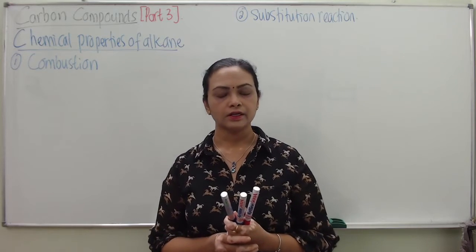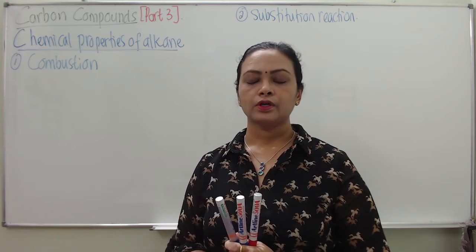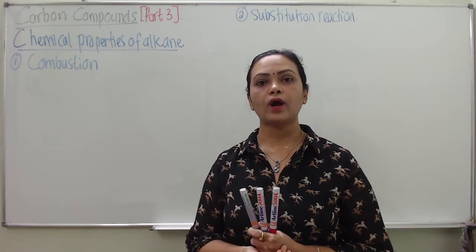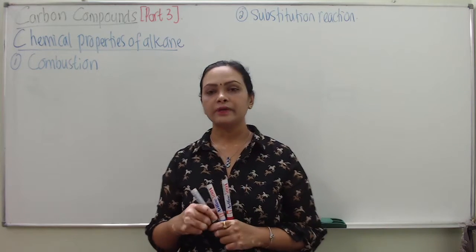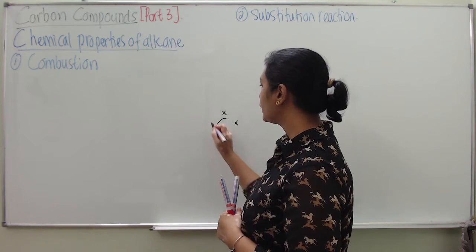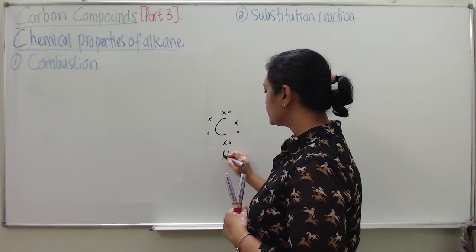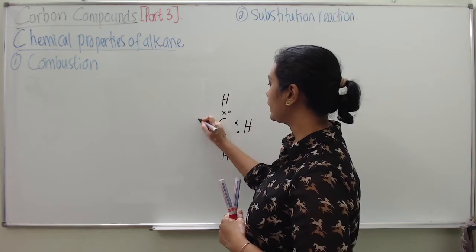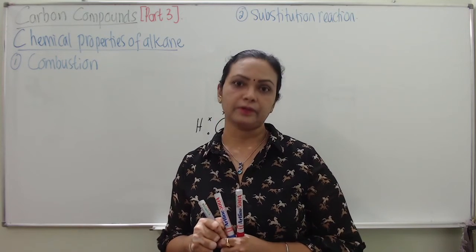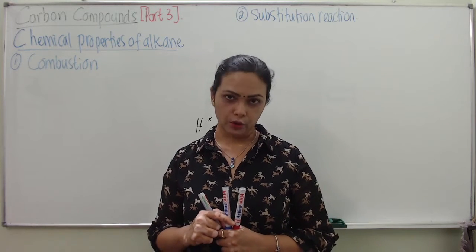Now in Part 3 I will concentrate on the chemical properties of alkane. Before we start I would like to highlight that alkane is a saturated hydrocarbon. Since it's saturated, meaning all the carbon electrons have been shared by hydrogen. In order to understand this you have to go back to Chapter 5, ionic and covalent bond in Form 4.